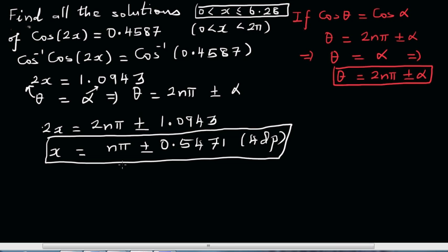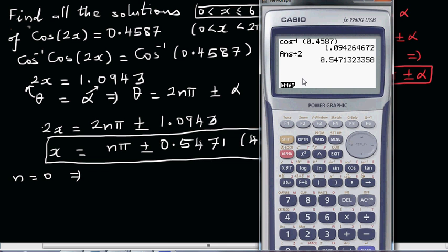If you put 0 here, so let's start with 0. If n equals 0, this implies, or you can also use a graphic calculator. I'll show you how to do this on a graphic calculator. Go to table menu.